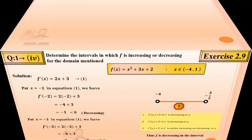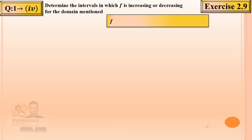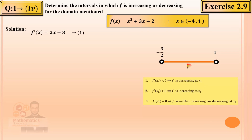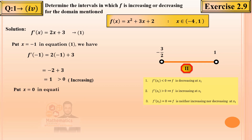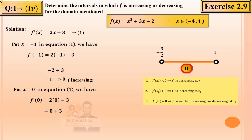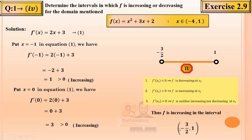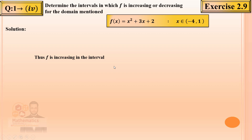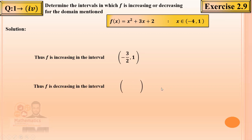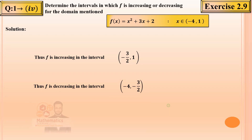Second case: interval (-3/2, 1). Choose x = -1: f'(-1) = 2(-1) + 3 = 1, greater than 0 — increasing. Choose x = 0: f'(0) = 3, greater than 0 — increasing. So the function is increasing on (-3/2, 1). Summary: f(x) = x² + 3x + 2 is decreasing on (-4, -3/2) and increasing on (-3/2, 1).